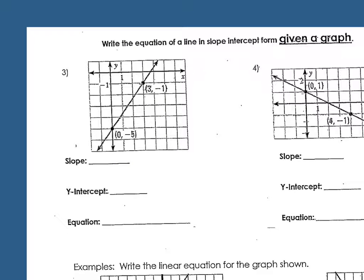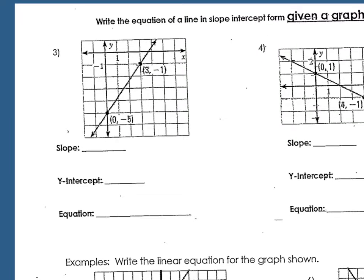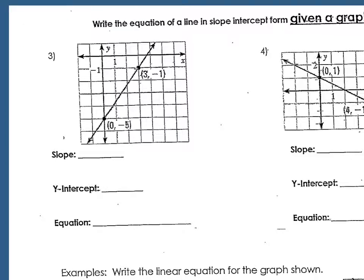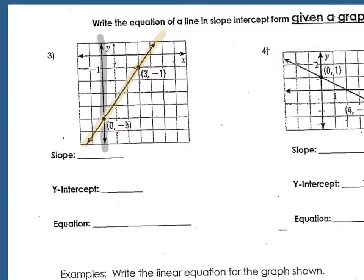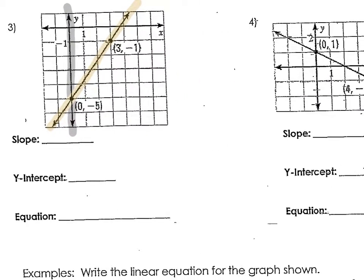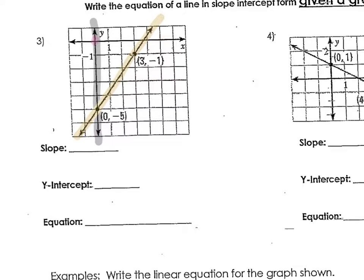The first thing I would write down, the first thing I would look for when they give you a graph, because you're going to see something like this on the test, find your y-intercept first. If this is my y-axis, this is my slope. So where did it cross that y-axis? So here's your origin. On the y-axis, it's 1, 2, 3, 4, down here at negative 5.